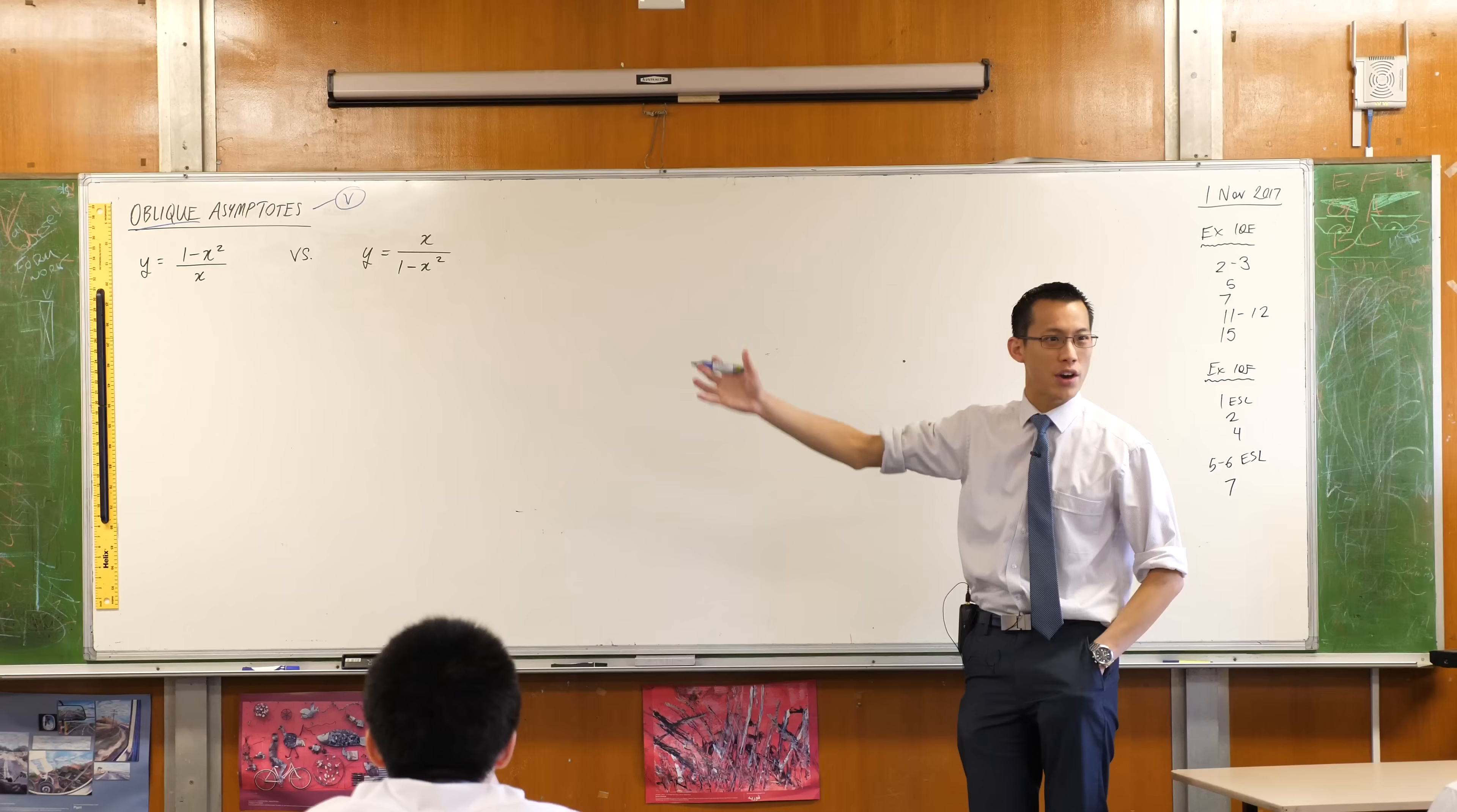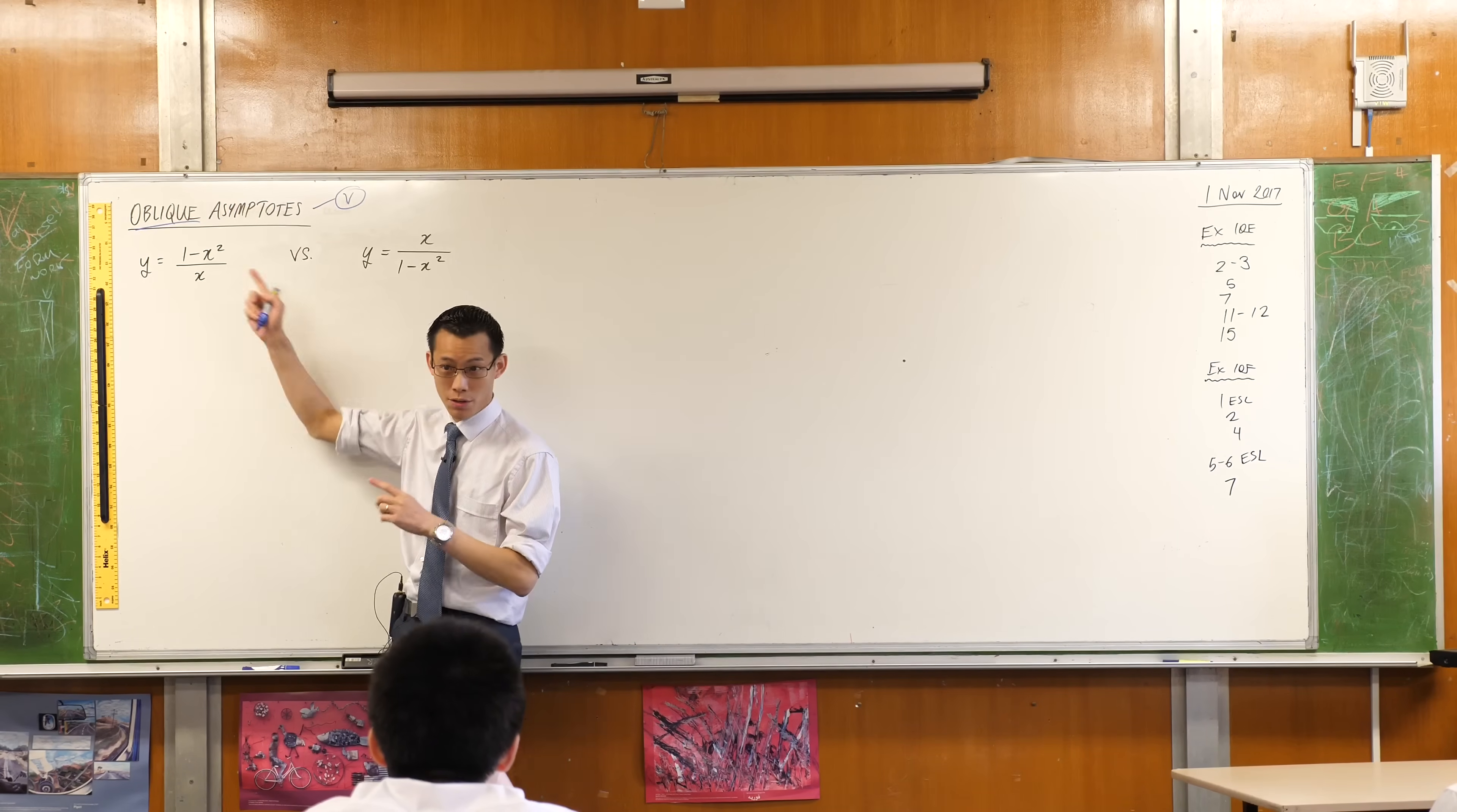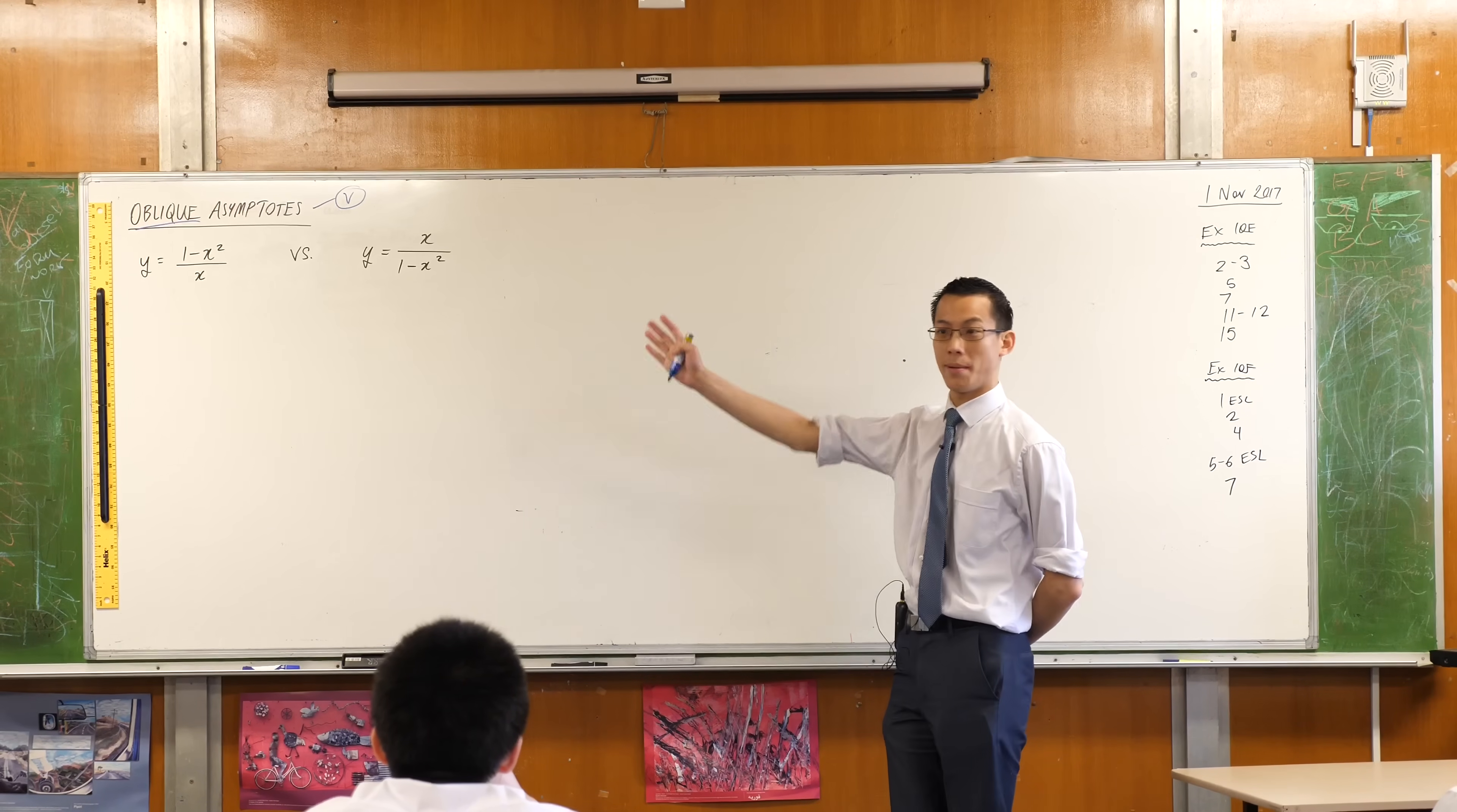Both of these functions have vertical asymptotes. Let's have a look at the left-hand one. What's its vertical asymptote? It has a single vertical asymptote. Where is it? It's going to be at x. Be a little more specific than just the number because of course it's a line. It's x equals zero. When the denominator is zero, you're in trouble.